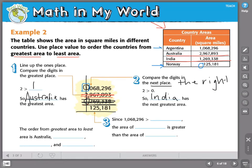That tells me right away that Argentina has the greater area than Norway, because it has more than a million square miles, while Norway has less than a million square miles. Since 1,068,296 is greater than, let's see, 125,181, the area of Argentina is greater than the area of Norway.